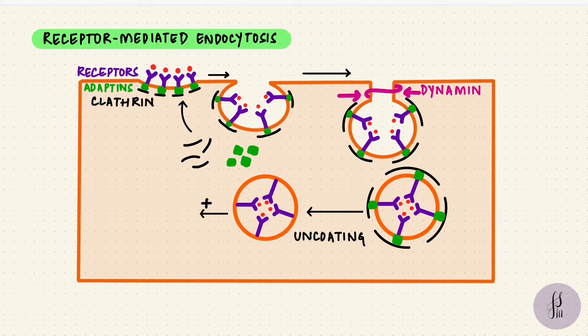After uncoating, it fuses with an endosome to form an early endosome. The endosome has proton pumps on its membrane. They send hydrogen ions into its lumen, keeping the environment acidic. That acidity helps the ligand detach from its receptor.